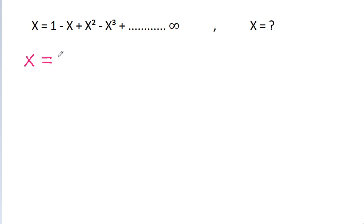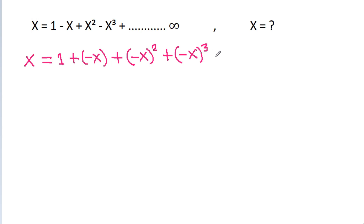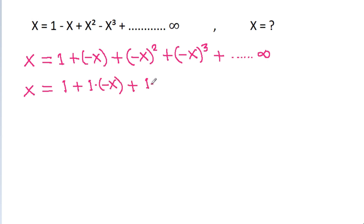We have x equal to 1 plus (-x) plus 1 times (-x) squared plus 1 times (-x) cubed plus up to infinity. This rewrites the series with each term as 1 times (-x) to successive powers.